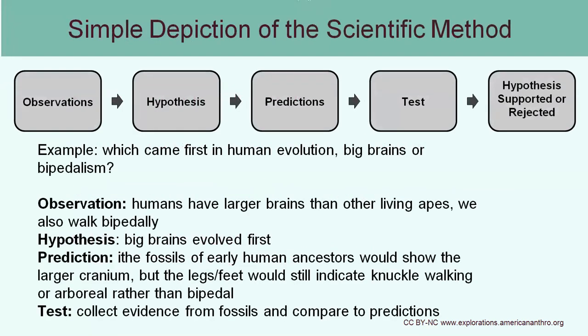The actual scientific method is the process that scientists use. We start with observations, then we come up with our hypotheses, which are statements. Then we have our predictions, and then we're going to test that prediction. Either the hypothesis is supported by our data or it's rejected. An example in the way an anthropologist might approach this: we might have a question such as what came first in human evolution — our big brains or our bipedalism? Bipedalism means walking on two legs. All modern humans walk on two legs, but our ape ancestors did not — modern living apes use knuckle walking, using all four of their limbs to run around on the ground.